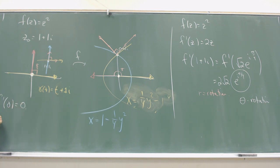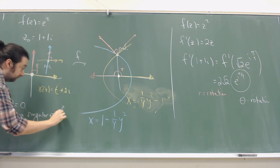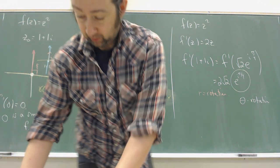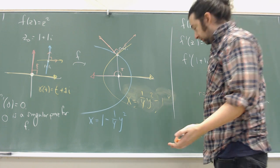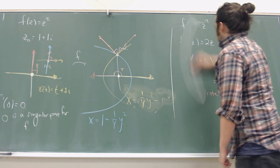The reason the function fails to be conformal at that point is because f'(0) = 0. That means zero is a singular point for f. Singular does not mean singularity — it means that something is strange about the way the function is acting locally.